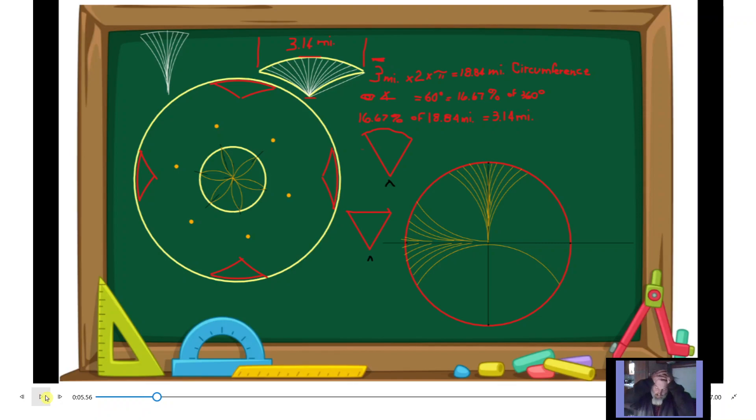Now I've established a method of measure, so I need to know how much rise is in here. I get my math going: three times two times pi for the circumference of my circle of view that I have. The angle of vision on the human is approximately 60 degrees, and 60 degrees is 16.67 percent of 360 degrees. 16.67 percent of 18.84 miles is 3.14 miles.